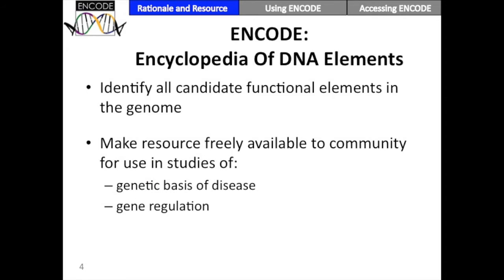ENCODE is the Encyclopedia of DNA Elements. The goal of the project is to identify all of the functional elements in the genome. This is an aspirational goal — there's no way to actually know whether this is complete or how complete it is. We're also trying to make this resource freely available to the community, which is a major idea behind the project. We're hoping that people can use it in studies of disease and studies of gene regulation.